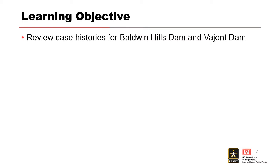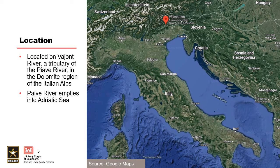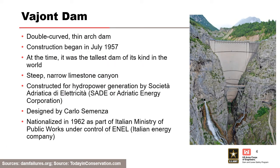First, we're going to start with Vajont Dam. This one really gets me excited. It's located in the Italian Alps — hopefully you notice that boot shape is Italy — with the little red dot up at the top showing our location. Vajont Dam empties out to the Piave River, and ultimately that leads to the Adriatic Sea. For you engineers, this is a double-curved, thin-arch dam.